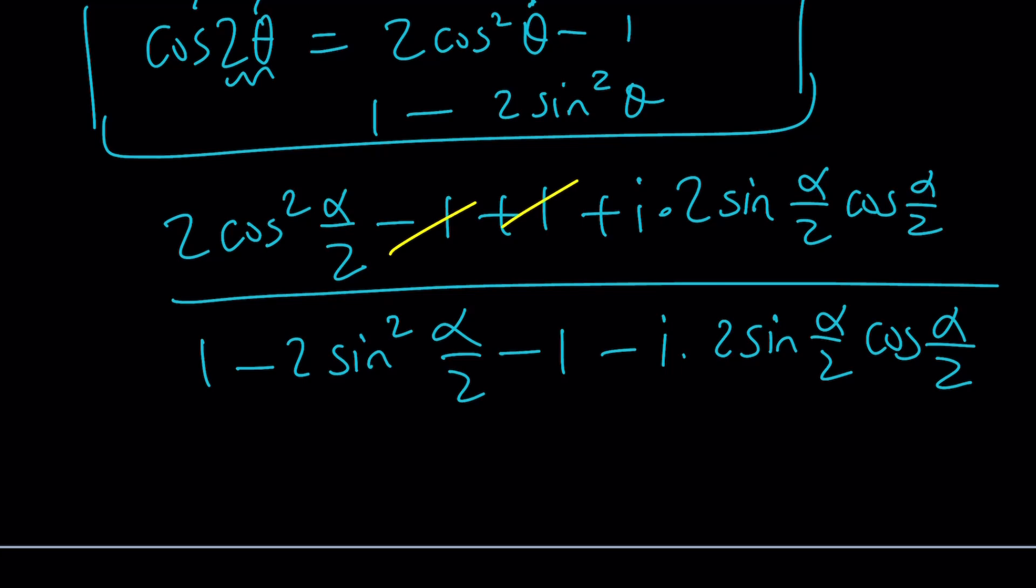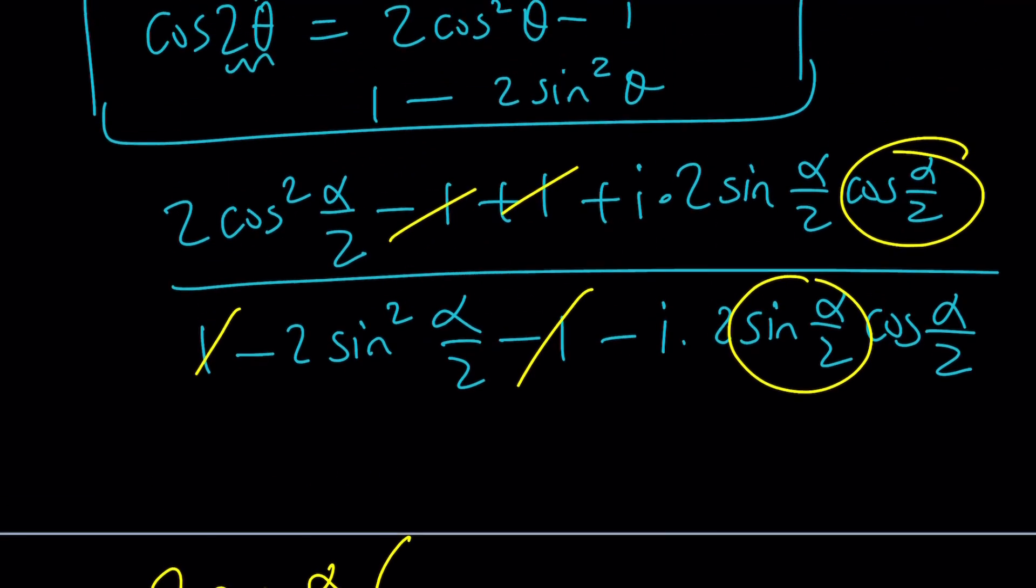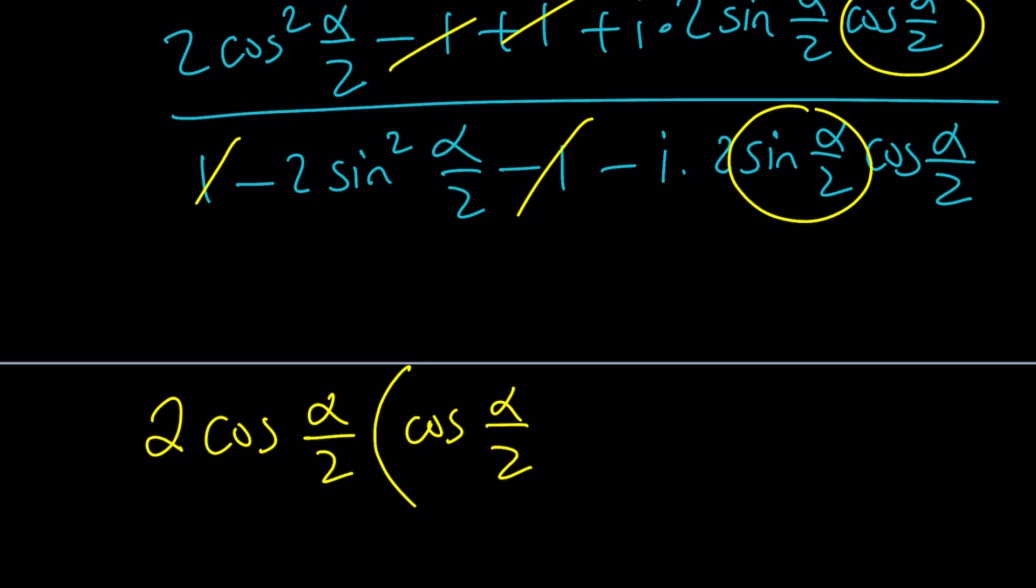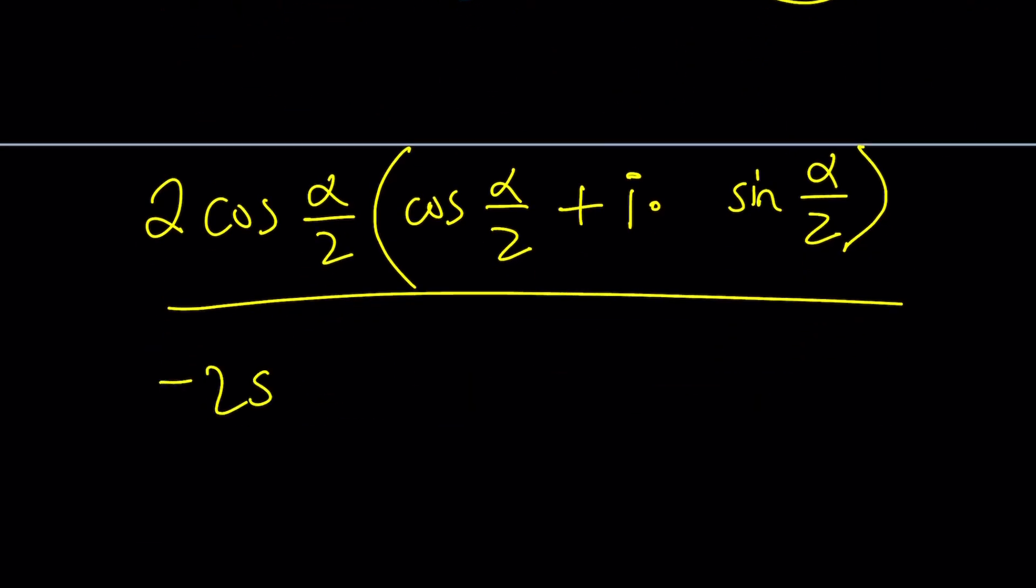Now we're going to replace cosine alpha with 2 cosine squared half of alpha minus 1, and there's a plus 1, and there's a plus i. And then for sine alpha, I'm going to use 2 sine theta cosine theta. This is the double angle for sine, and it's just the one formula. So it's going to be 2 sine alpha over 2, cosine alpha over 2. And now we're going to divide this whole thing by pretty much the same thing.